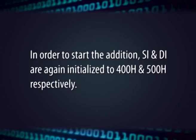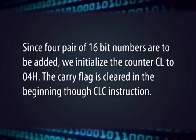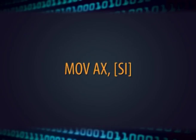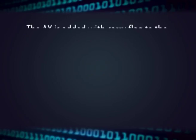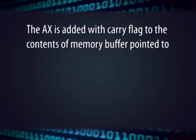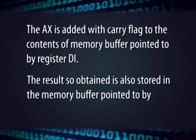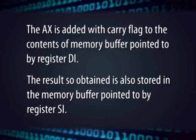Next, in order to start the addition, SI and DI are again initialized to 400H and 500H respectively. The addition starts from the first pair of two 16-bit numbers. Since 4 pairs of 16-bit numbers are to be added, we initialize a counter CL to 04. The carry flag is cleared in the beginning through the CLC instruction. The first 16-bit number is brought to register AX from the memory buffer pointed by SI through the instruction MOV AX, [SI]. Next, AX is added with carry to the contents of the memory buffer pointed to by register DI. The result is also stored in the memory buffer pointed to by register SI.